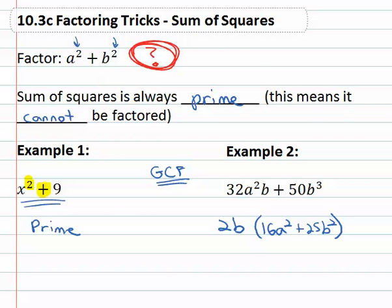and yes there's squares, but it's a sum of squares. And a sum of squares is always prime, so we can't factor any more.